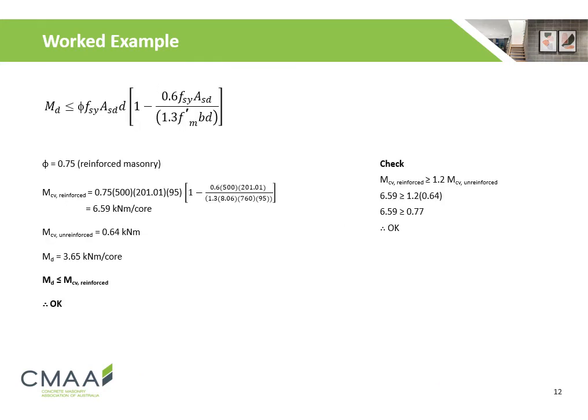Before the reinforced design bending capacity can be used, it first must satisfy the unreinforced masonry capacity check. Using a capacity reduction factor of 0.75, the vertical bending capacity is calculated to be 6.59 kNm per core. The capacity of an unreinforced masonry wall equivalent is calculated to be 0.64 kNm. The reinforced bending capacity is greater than 1.2 times the unreinforced bending capacity, and therefore satisfies the check.